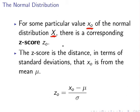Now, the Z-score is the distance, in terms of standard deviations, that x0 is away from mean mu. So, how we would calculate it is this little formula here.